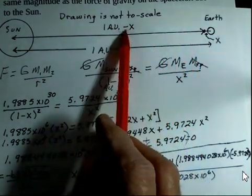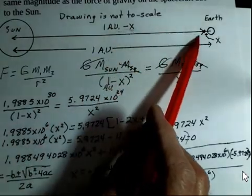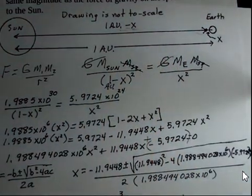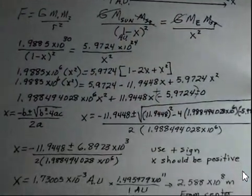We need to use an x that's positive. So, we end up with a distance from the sun to the spacecraft that's smaller than one astronomical unit. So, that's why I say x should be positive.